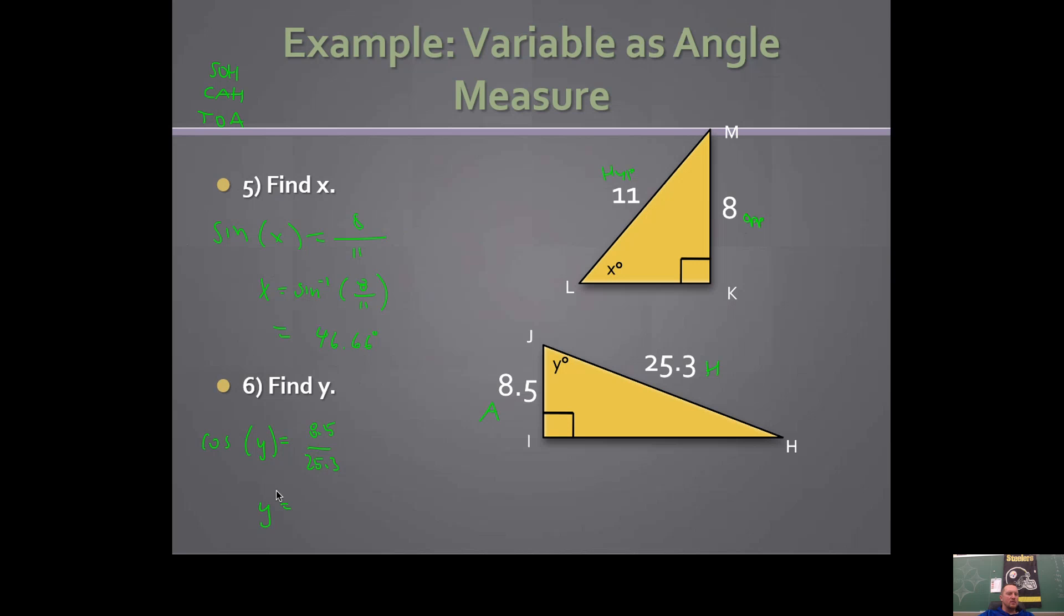You want to get y by itself, so you do inverse cosine of both sides. And this will be our angle measure.